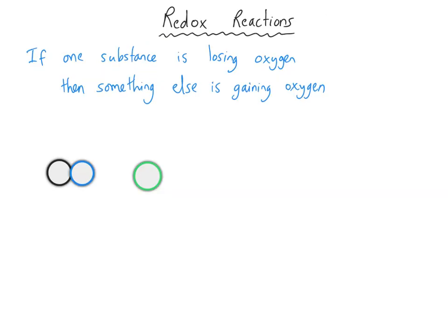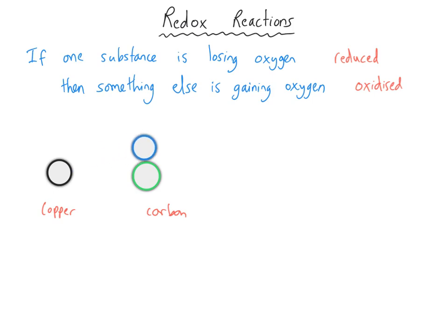It's perhaps not immediately obvious, but if one substance is losing oxygen, then something else must be gaining it — that oxygen has to go somewhere. So if one substance is being reduced, then something else must be being oxidized. We can see that from a particle diagram: if we consider the elements on the left to be copper, the elements on the right to be carbon, and the blue particle to be oxygen, if the carbon comes along and takes the oxygen away from the copper, the copper has been reduced because it lost oxygen and the carbon has been oxidized because it gained oxygen.